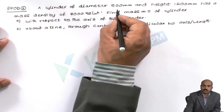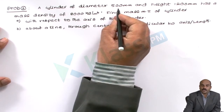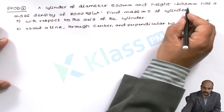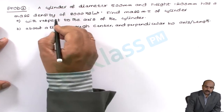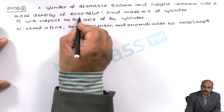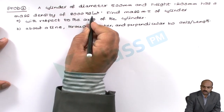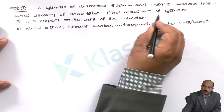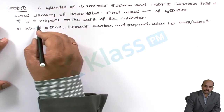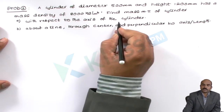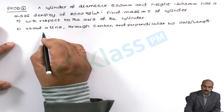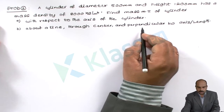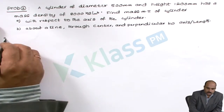A cylinder is given with a specified diameter and height, and it has a mass density of 8000 kg per meter cube. The problem asks us to find the mass moment of inertia: first, with respect to the axis of the cylinder, and second, perpendicular to the axis. Let us solve this problem.